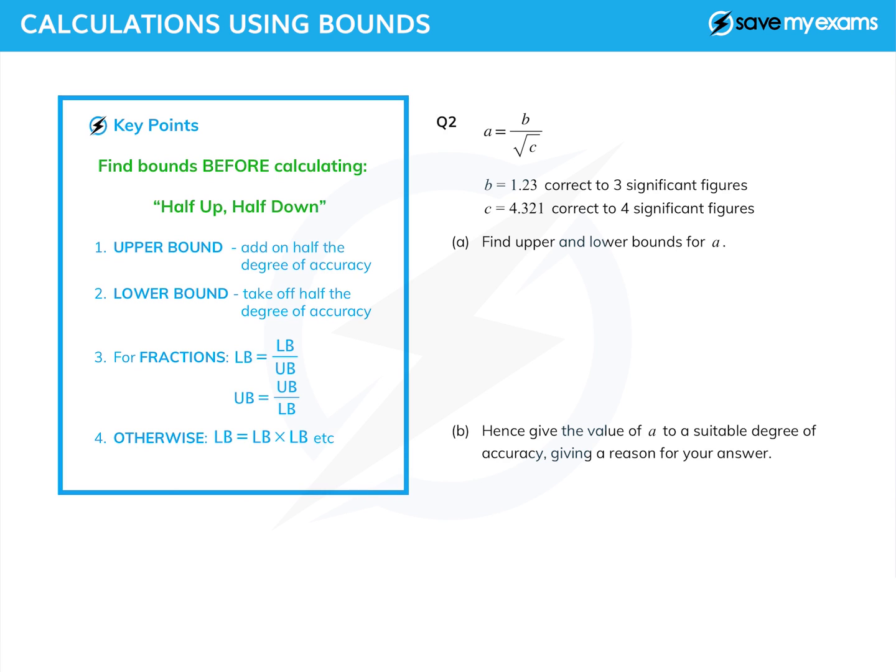Okay, let's have a look at a slightly harder question. And we're given a formula: a equals b divided by root c. And we have b—first one correct to three significant figures—and c is correct to four significant figures, and we're asked to find upper and lower bounds for a.